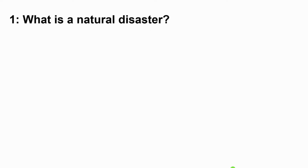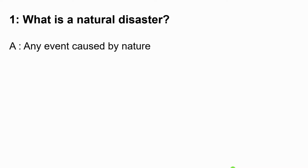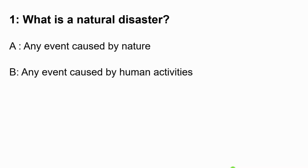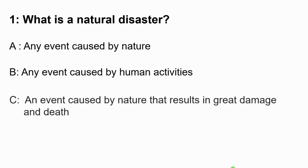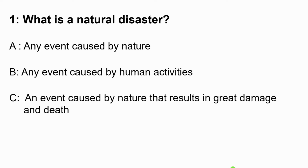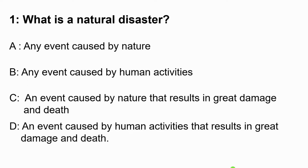Question 1: What is a natural disaster? Option A says any event caused by nature. B says any event caused by human activities. C says an event caused by nature that results in great damage and death. And D says an event caused by human activities that results in great damage and death. The correct answer is C: an event caused by nature that results in great damage and death.